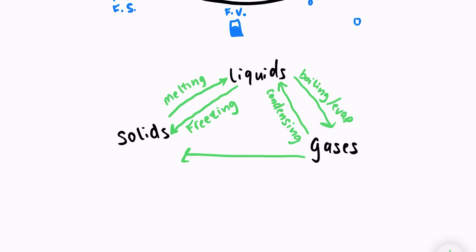Changing from a gas into a solid is called deposition. A gas is depositing into a solid. And changing from a solid back into a gas is known as sublimation.